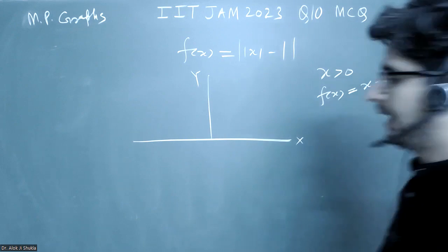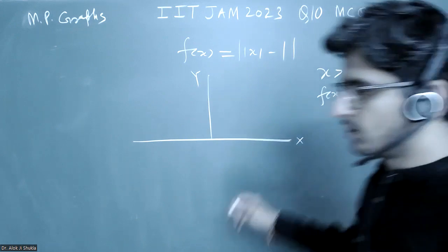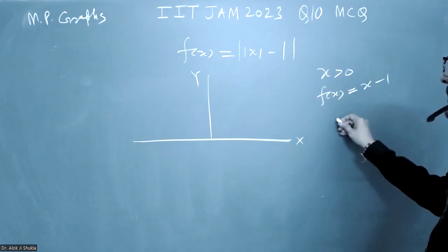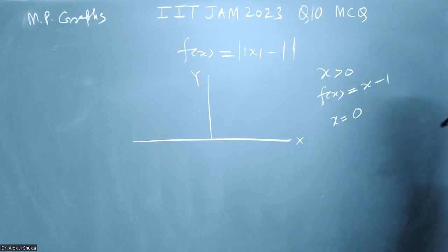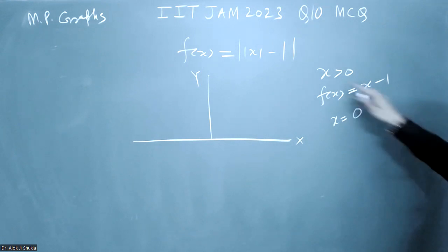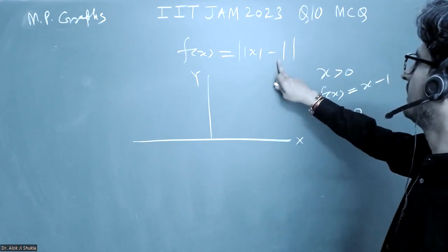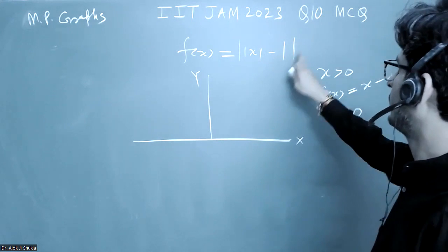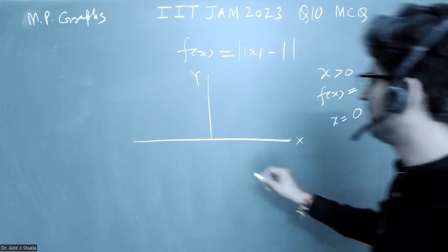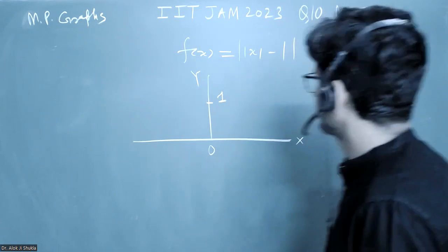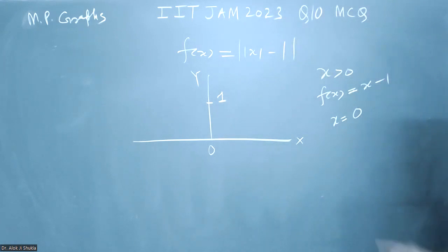Let us plot this. So at x is equal to 0, what will be the value? At x equals 0, if I put 0 here you will get minus 1, and because of the modulus you will get 1. So you will get 1 here.